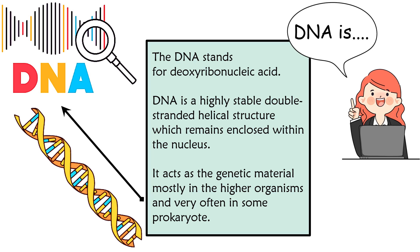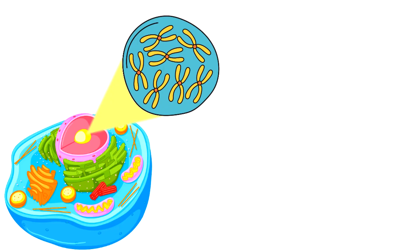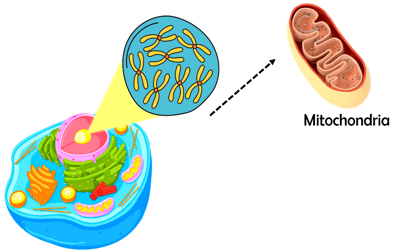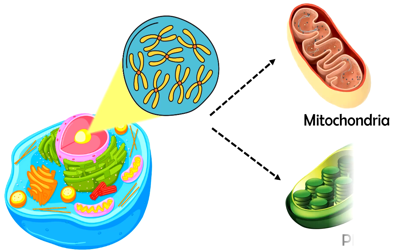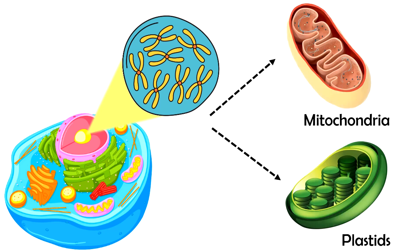DNA is a highly stable, double-stranded helical structure which remains enclosed within the nucleus. Apart from the nucleus, some other organelles like mitochondria and plastids also contain DNA. However, this DNA is not passed from parent to offspring and thus it is considered to be non-hereditary.